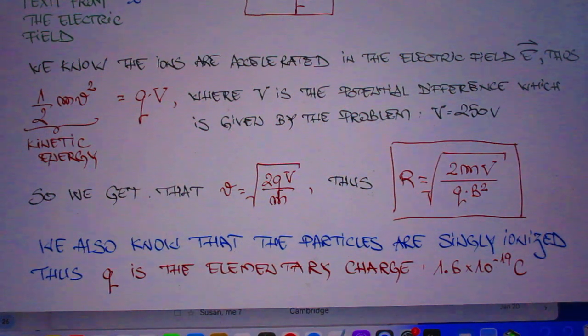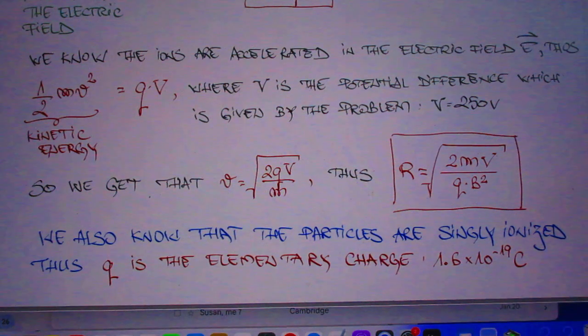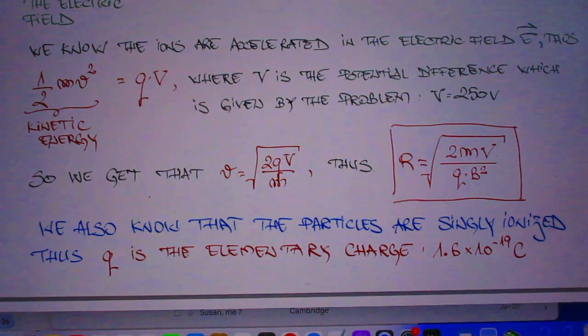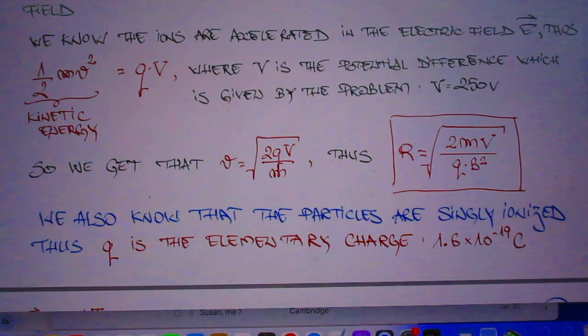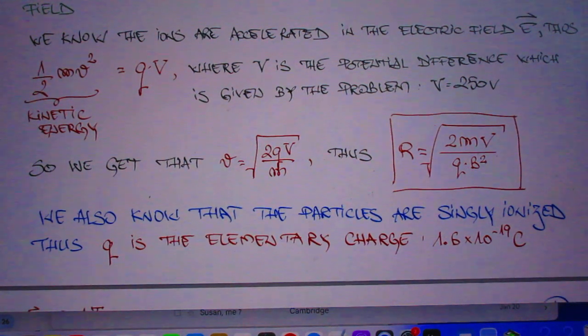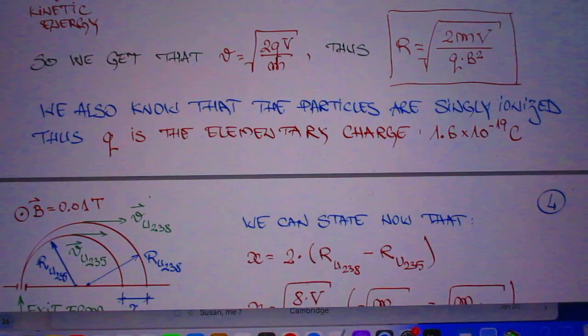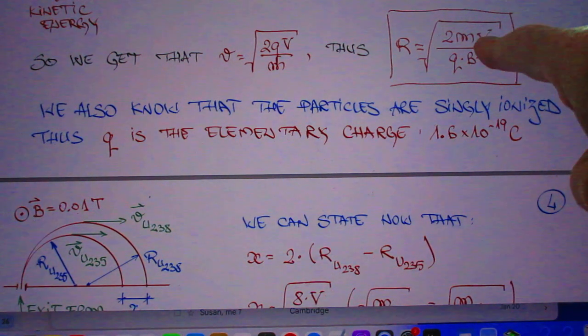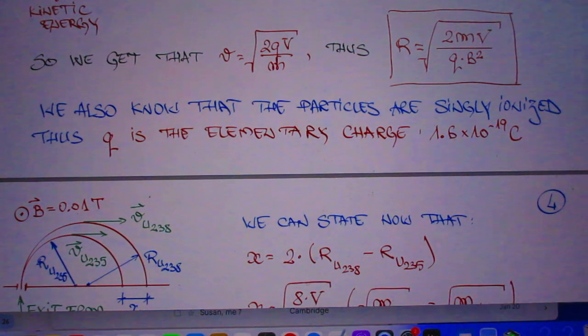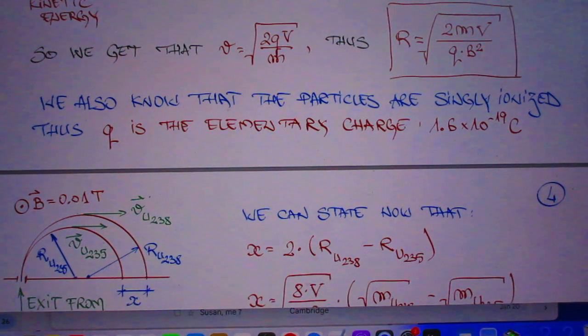He reminds you that the B is coming out of the paper in your direction and it is one hundredth of a Tesla. So he does a little bit more math and there out pops the radius. We know the ions are accelerated in the electric field E. In other words, one-half MV squared is QV. High school physics, and of course also covered by me in my 802 lectures. So V is the potential difference which is given by the problem, it's 250 volts. So he massages the algebra a little further and here you get a very important final result. It has the mass of the ions, it has the potential difference over which they are accelerated, the charge and the B field.